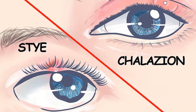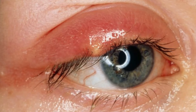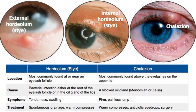First of all, let me tell you what a stye is. A stye, also called a hordeolum, is a small, red, painful lump that grows from the base of your eyelash or under the eyelid. Most styes are caused by a bacterial infection. There are two kinds of styes. The first is an external hordeolum — a stye that begins at the base of your eyelash, most caused by an infection in the hair follicle. It might look like a pimple.